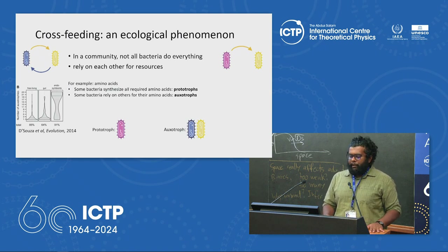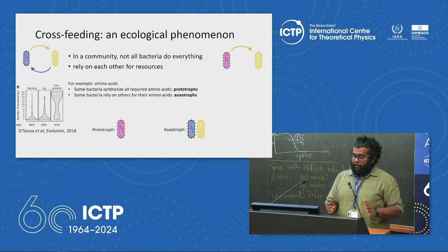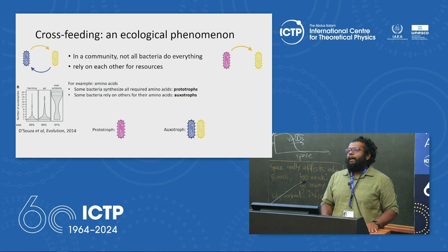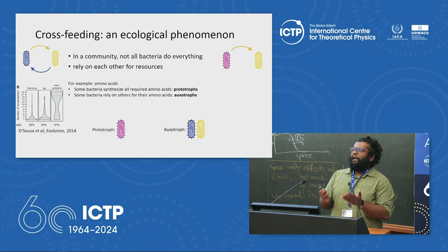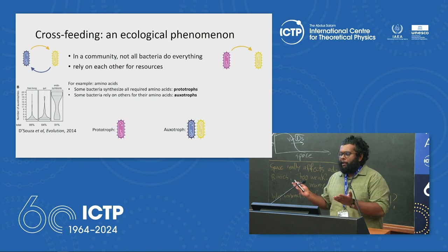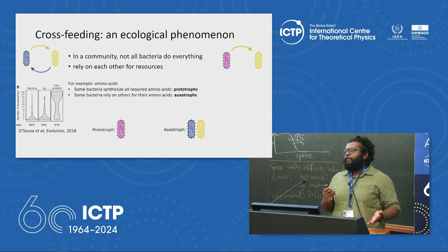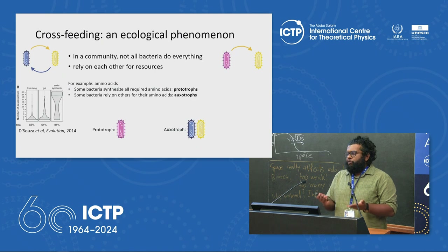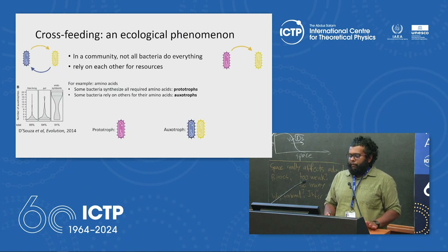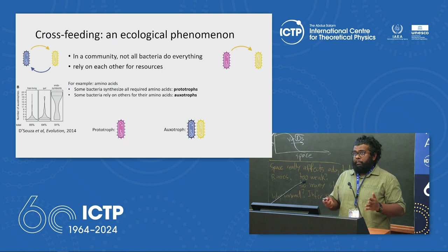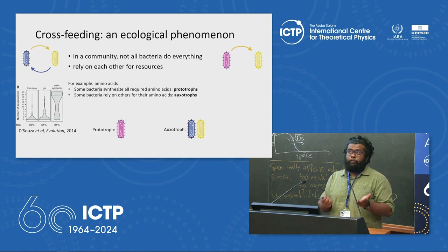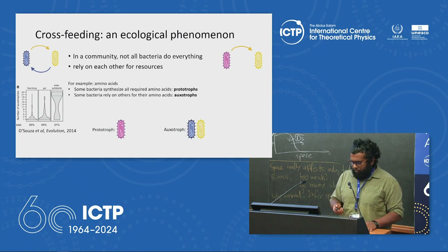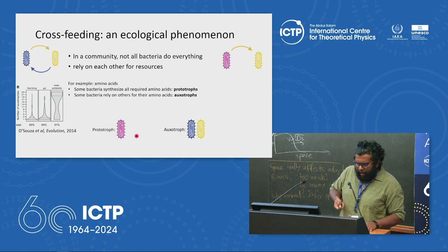Auxotrophy is very common — it is more the rule than the exception. Most bacteria in most real communities are auxotrophic for at least one amino acid. An experiment by Constantinos, a postdoc in our group, showed on the left an auxotroph-auxotroph system and on the right a prototroph-auxotroph system. The two auxotrophs grow with each other quite well, especially when close together, but in the prototroph-auxotroph system the auxotroph basically suspends growth.